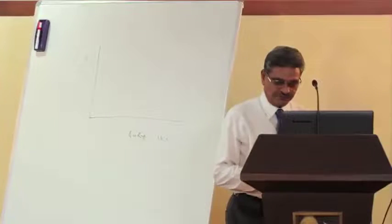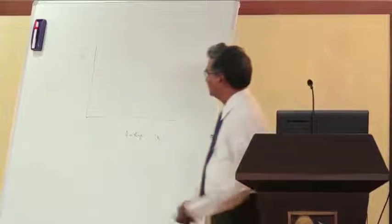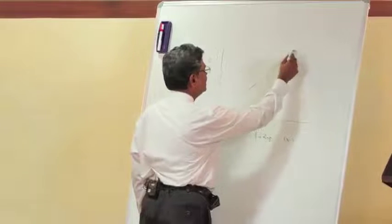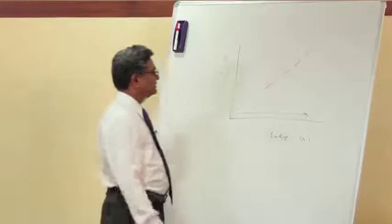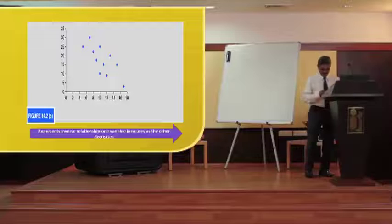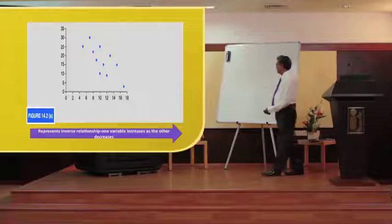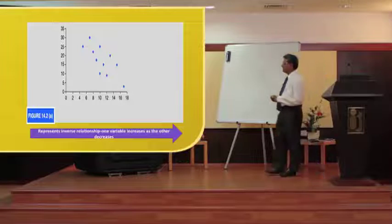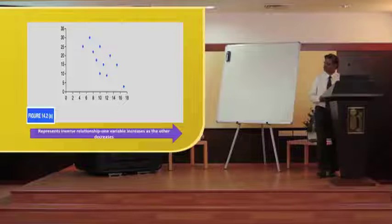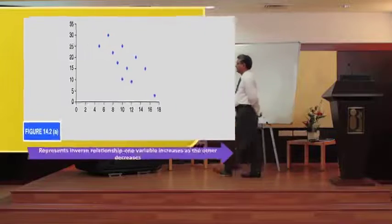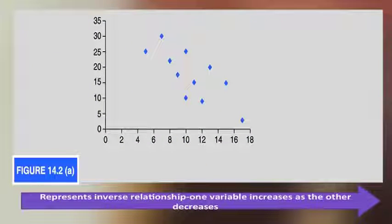The scatter graph does not tell us whether there is any relationship, but in this first graph it appears that the value of y is going up as x increases. In the second scatter graph, the values of y have come down as x increases — as x goes up, y values are coming down.